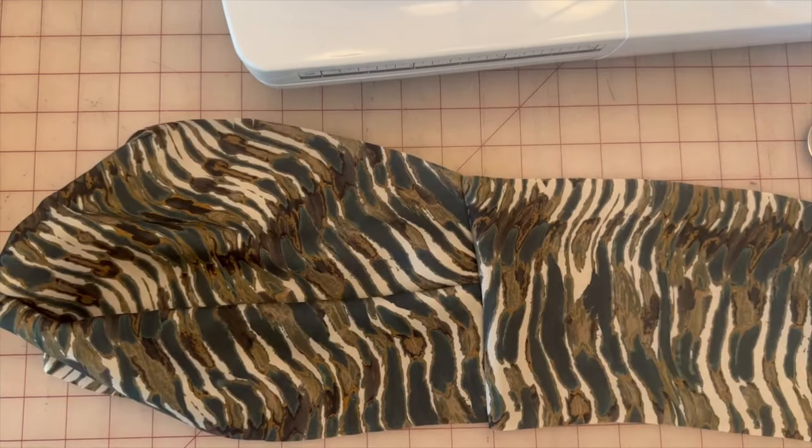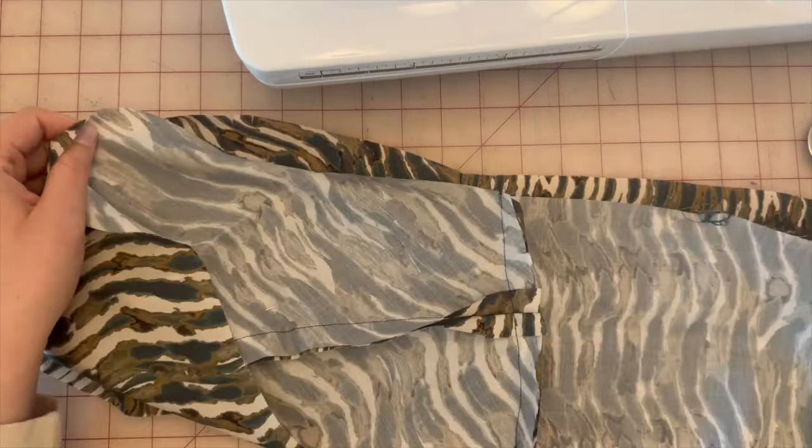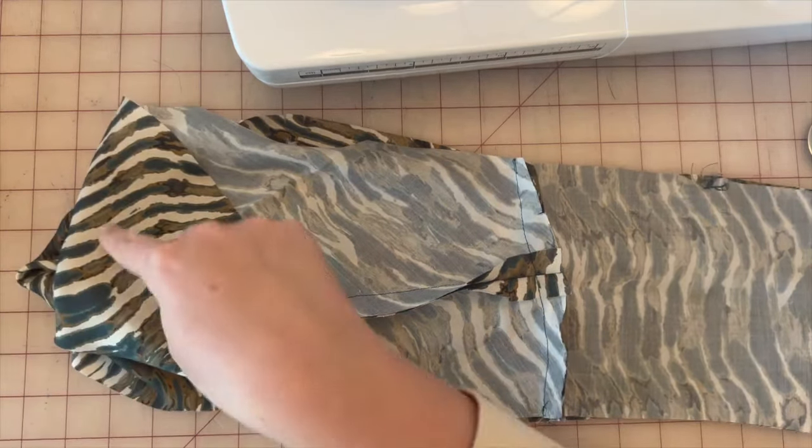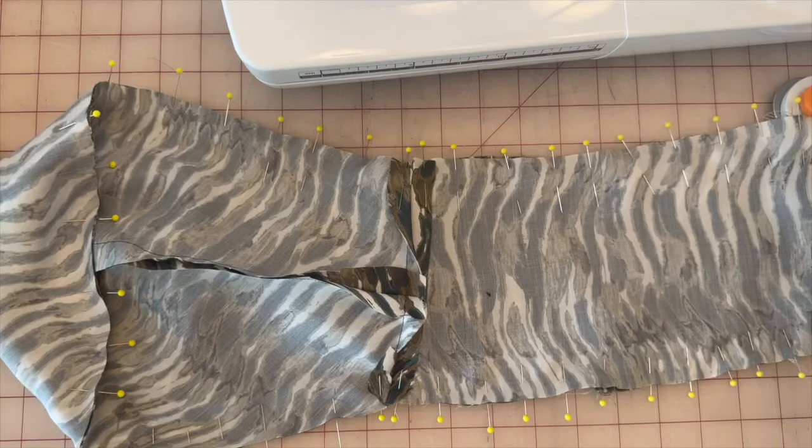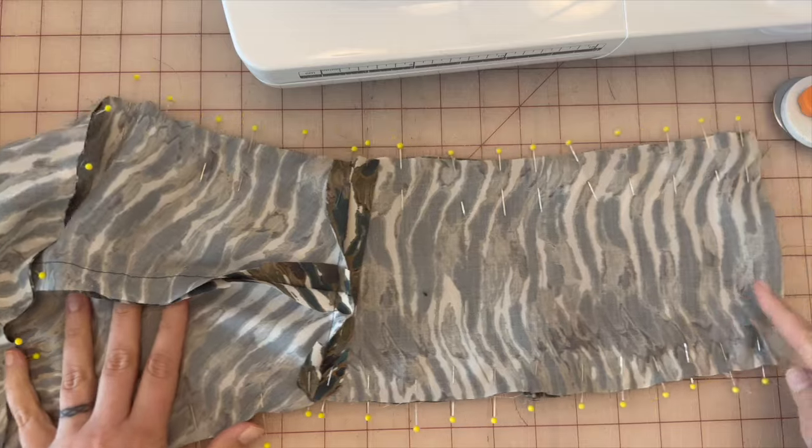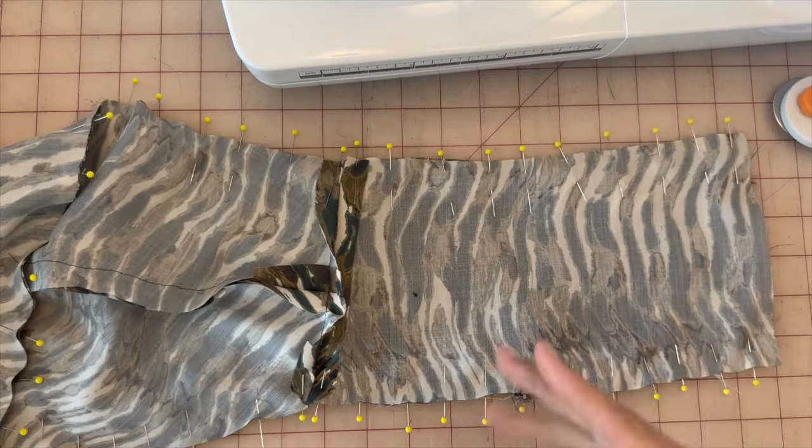Now that we've sewn up our lining, we're going to take our main fabric and we're going to match it up with our lining. And we are going to sew 5/8ths of an inch all the way around. So now that it's all pinned, we're going to sew 5/8ths inch around the edge. We're going to leave this side open so we can turn it inside out.